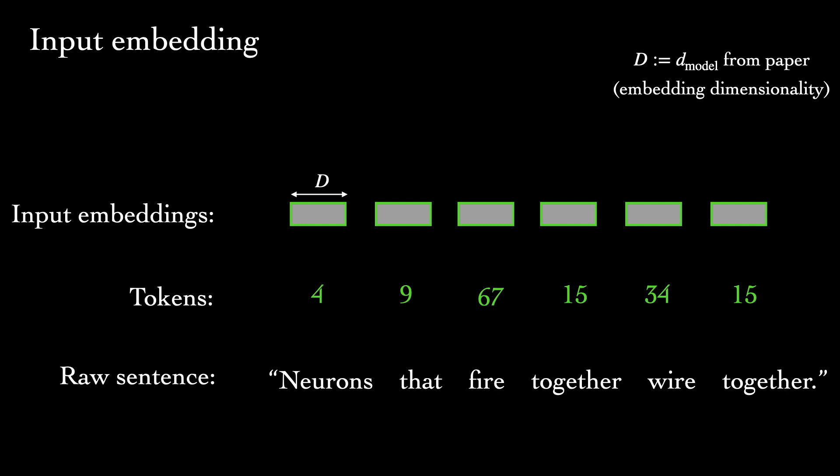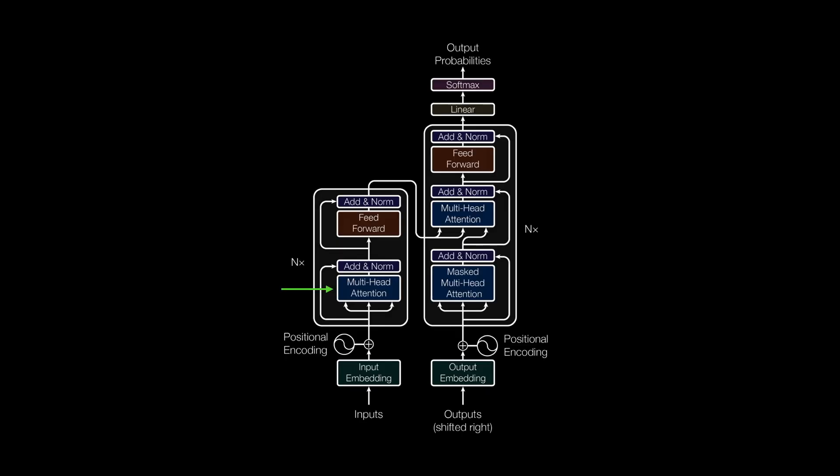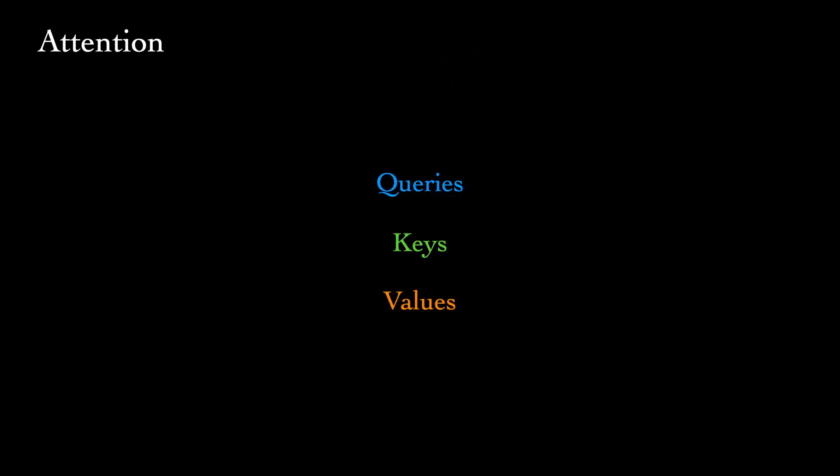Now, before we discuss positional encodings, let's understand attention, and we'll see what role positional encodings play afterwards. The attention mechanism consists of queries, keys, and values. The basic idea is that a query vector will be compared to a set of key vectors to determine how compatible they are. Each key vector comes paired with a value vector. The greater the compatibility of a given key with the query, the greater influence the corresponding value will have on the output of the attention mechanism. All three of these components—queries, keys, and values—are learned during training.